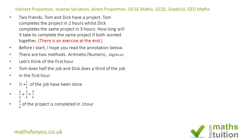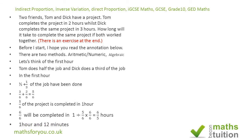Five-sixths of the job will have been done in one hour. Therefore the whole job — six-sixths — will be done in six-over-five hours, which is equivalent to one hour and 12 minutes. Now for the algebraic method — and at the end of this method there is a puzzle for you to do, so hopefully you'll be patient enough to watch to the end.